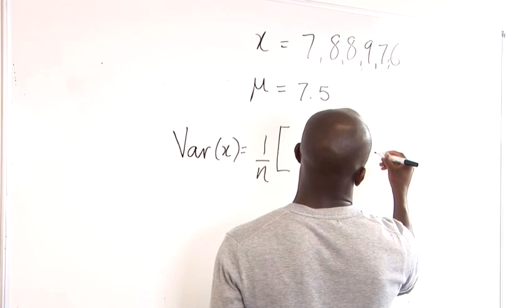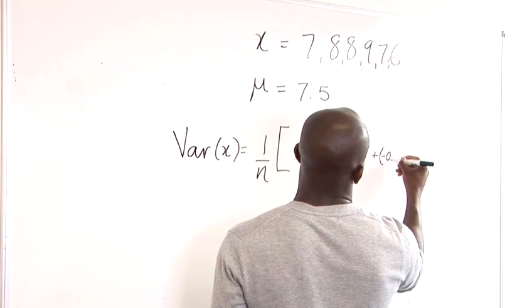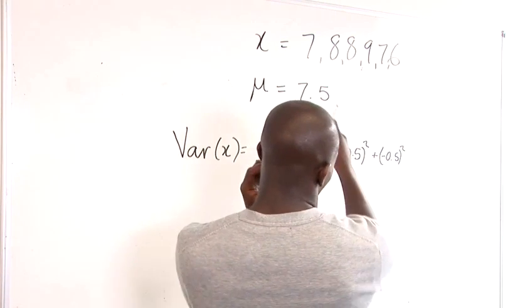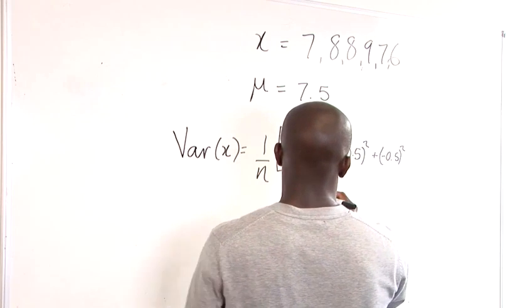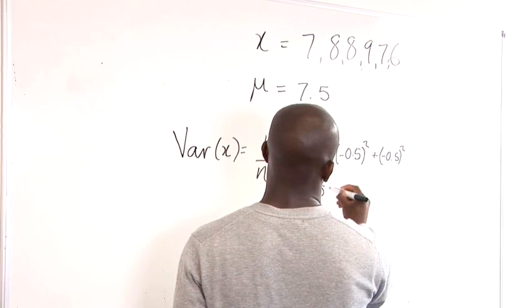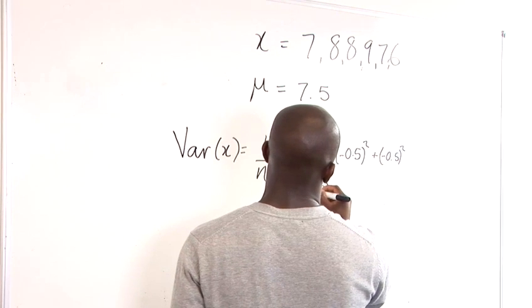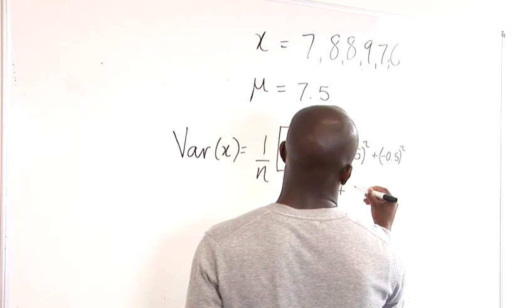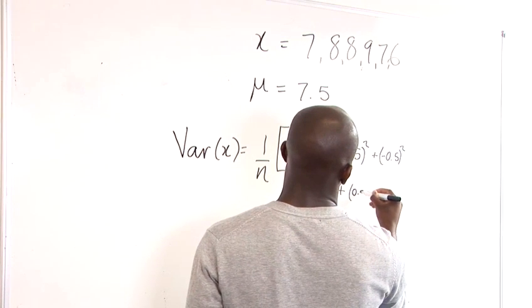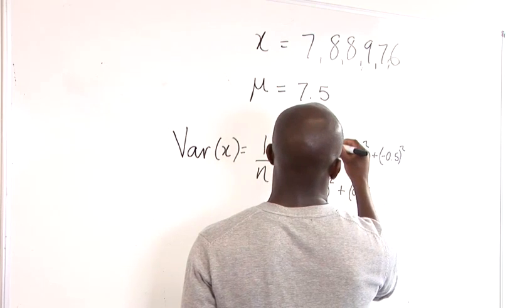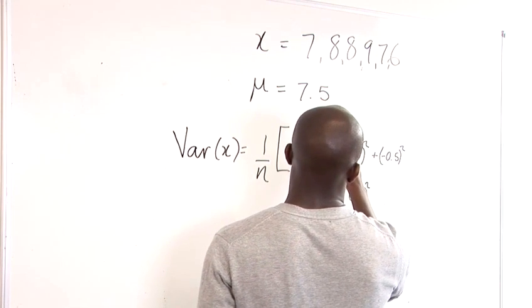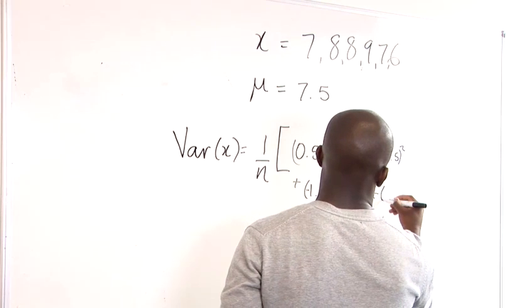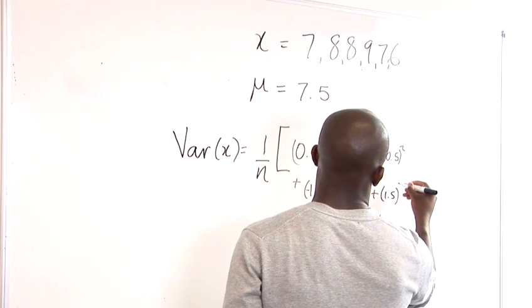And again we've got the same thing here, so plus negative 0.5 squared, and we'll come down here. Now we've got 7.5 take away 9, which would just be 1.5 squared, so minus 1.5 squared. And we've got 7.5 take away 7, which would again just be 0.5 squared, and we also have 7.5 take away 6, which would be 1.5 squared.